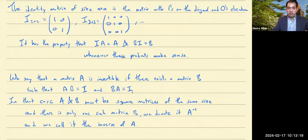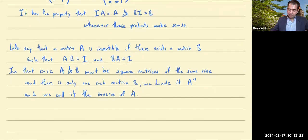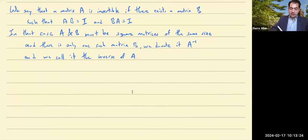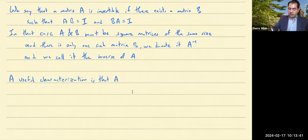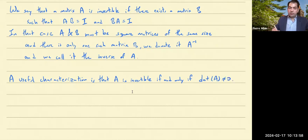Not every matrix has an inverse. A very useful characterization is that a square matrix A is invertible if and only if the determinant of A is not equal to zero. So let's talk about the determinant.